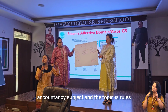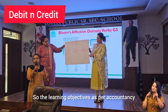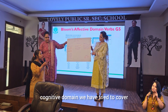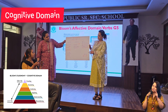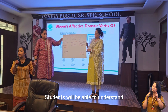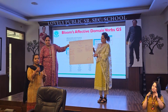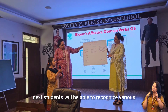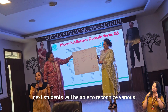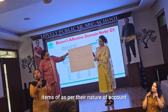The topic is Rules of Debit and Credit. The learning objectives, as per the accountancy cognitive domain, are: students will be able to understand the meaning of debit and credit, and students will be able to recognize various items as per their nature of accountancy.